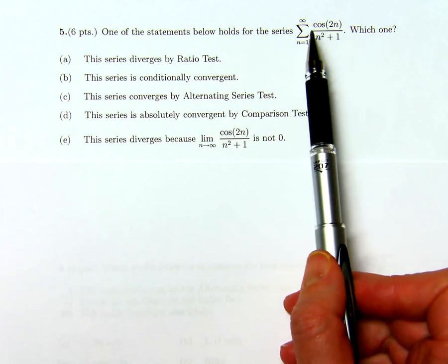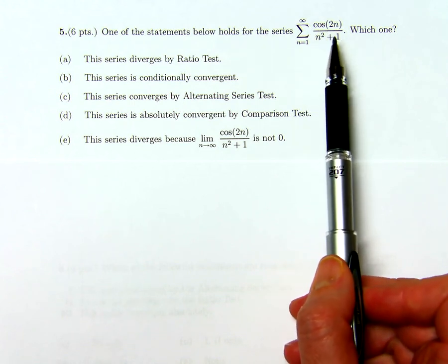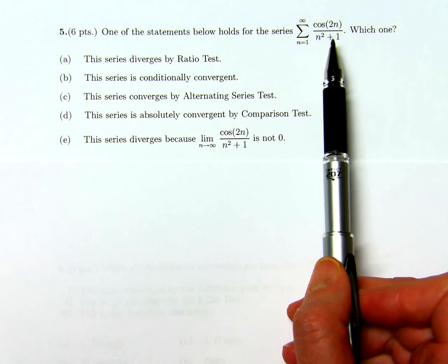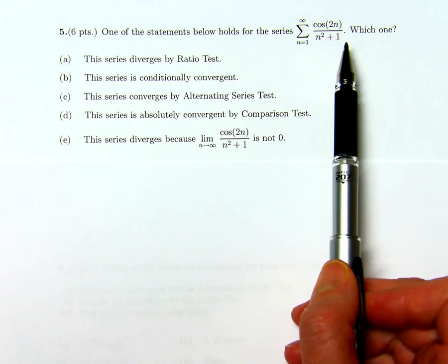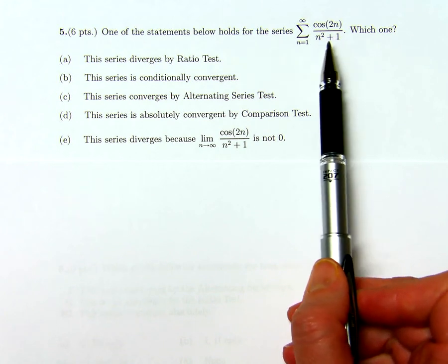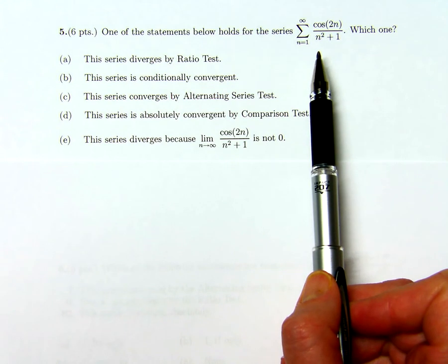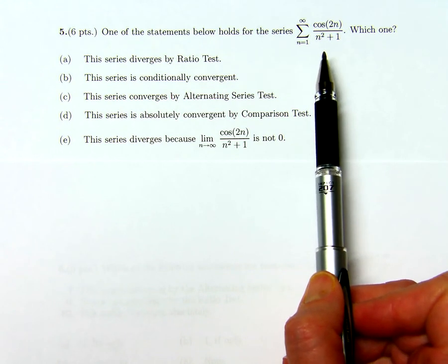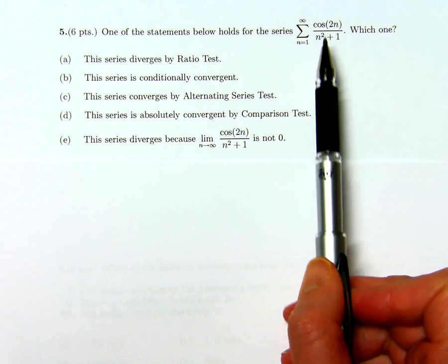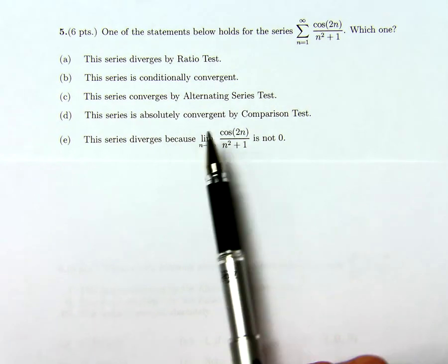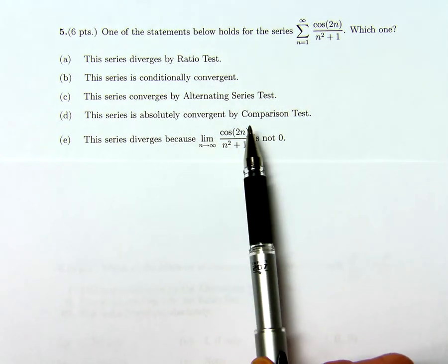So the absolute value of this is always between 0 and 1 over n squared plus 1. And now I know 1 over n squared plus 1, that behaves very like 1 over n squared as n goes to infinity. So my guess is that this converges absolutely by the comparison test.